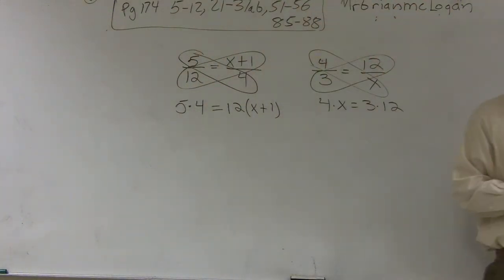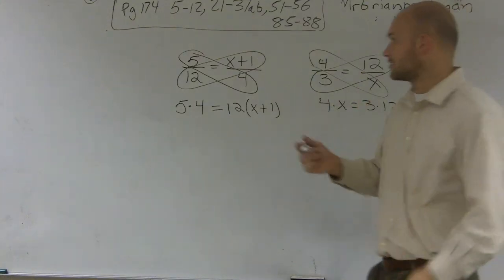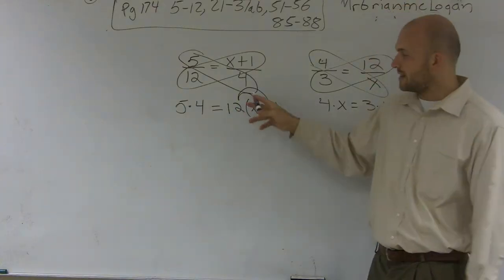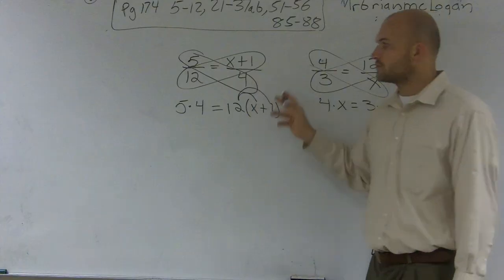And once we have it in parentheses, we can use our lovely distributed property to remind us that we have to multiply that 12 times the x and the 12 times the 1.